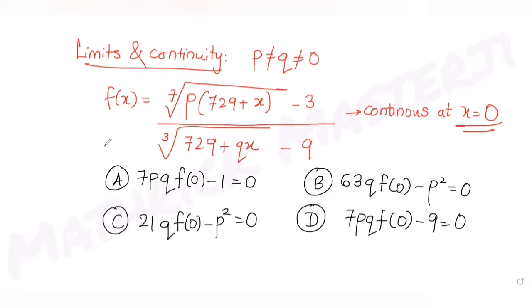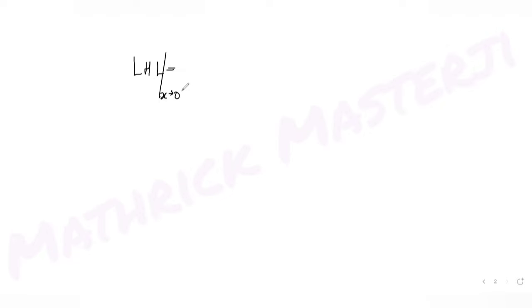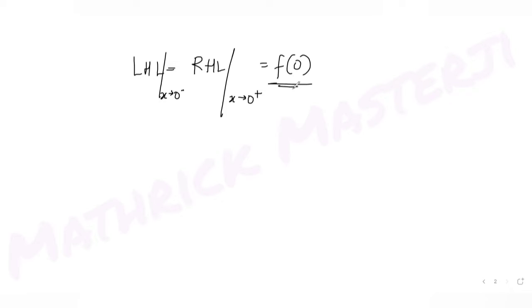Now let's see the solution. Since the function is continuous at x = 0, this means the left-hand limit as x tends to 0⁻ and the right-hand limit as x tends to 0⁺ are both equal to the function's value at x = 0, i.e., f(0).